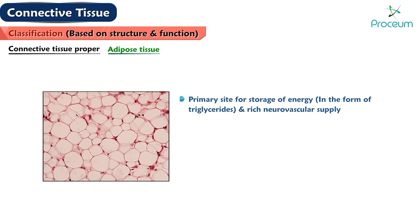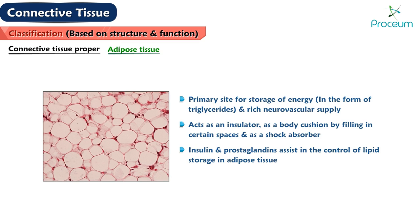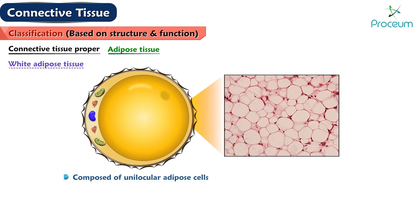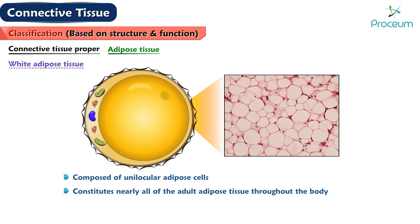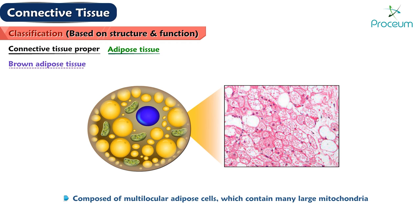Adipose tissue is the primary site for storage of energy in the form of triglycerides and has a rich neurovascular supply. It acts as an insulator, as a body cushion by filling in certain spaces, and as a shock absorber. Insulin and prostaglandins assist in the control of lipid storage in adipose tissue — for example, hypodermis, panniculus adiposus. White adipose tissue is composed of unilocular adipose cells and constitutes nearly all of the adult adipose tissue throughout the body. It controls fatty acid homeostasis by accumulating free fatty acids during excess caloric ingestion and releasing them during scarcity. Brown adipose tissue is composed of multilocular adipose cells which contain many large mitochondria.